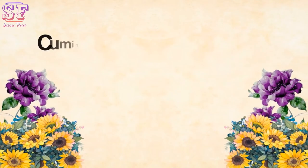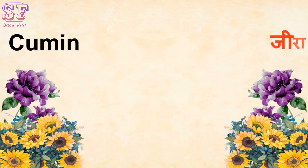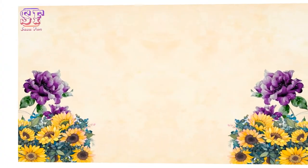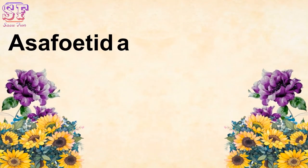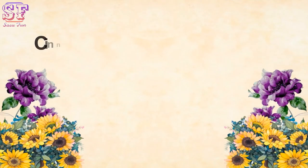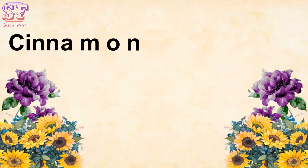Coriander — Dhania. Cumin — Jira. Asafoetida — Hing. Cinnamon — Dalchini.